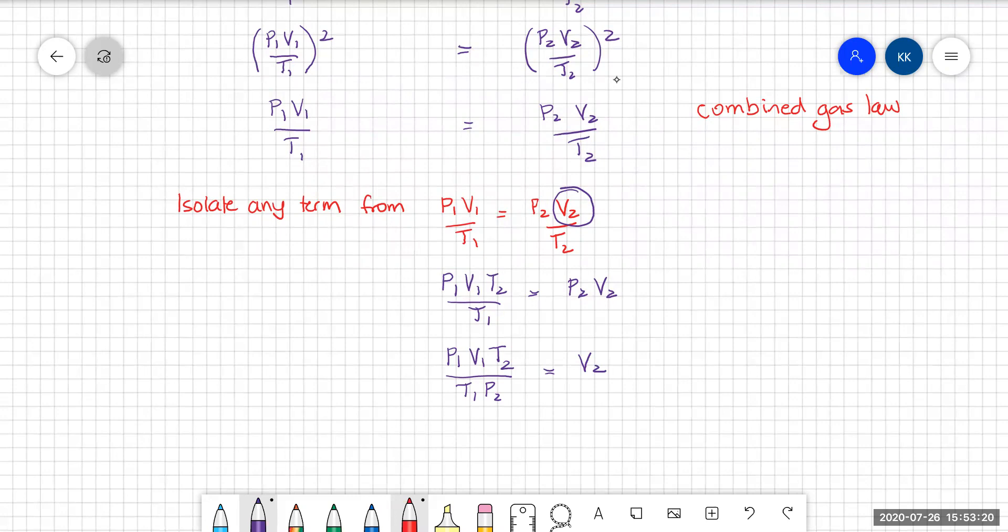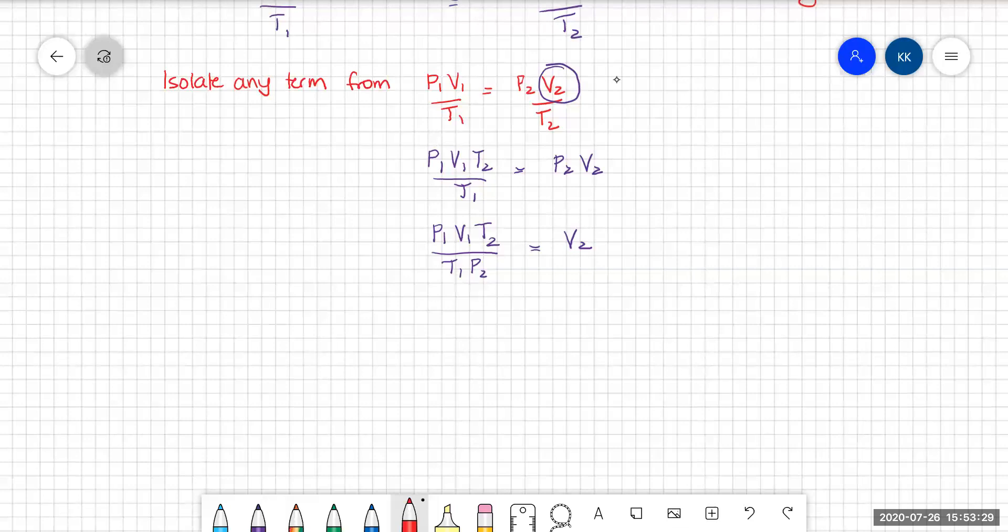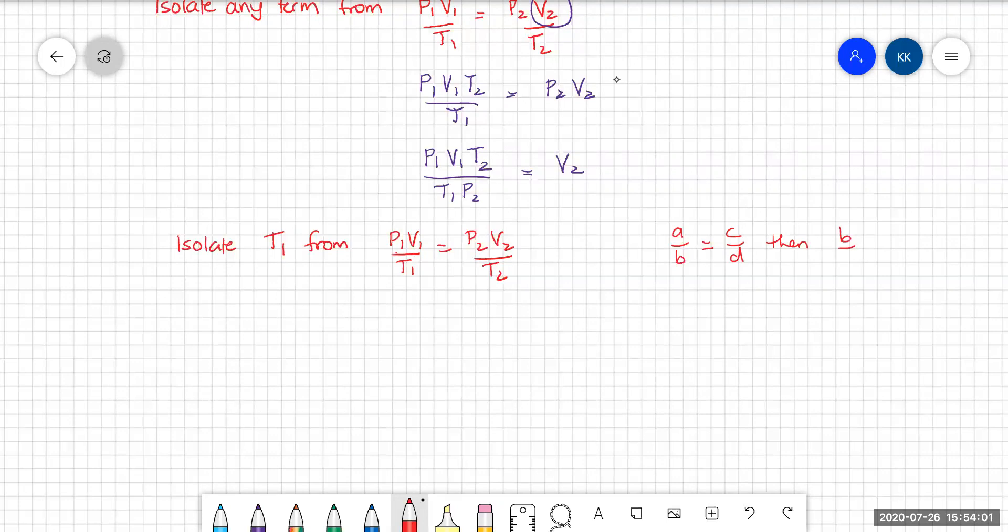So some tricky algebra. I think possibly the trickiest is if you've got to isolate one of the two temperatures. So let's try and isolate T1 from P1V1 over T1 equals P2V2 over T2. Now you could do a whole lot of cross multiplying here, but I'm going to make use of the fact that there is a law of ratio. If A over B equals C over D, then B over A equals D over C. You can just invert both sides. So I would invert both sides.